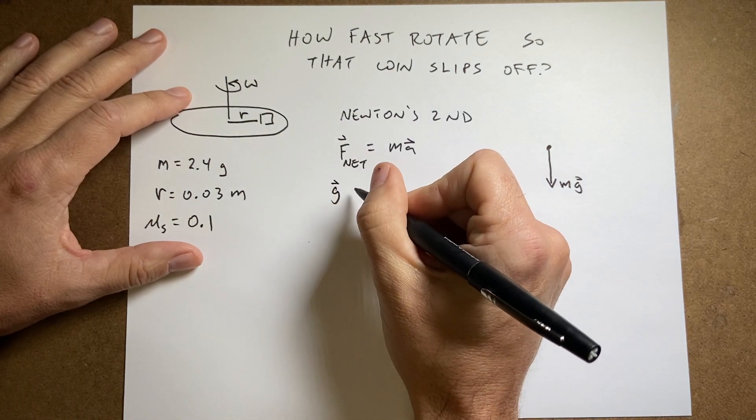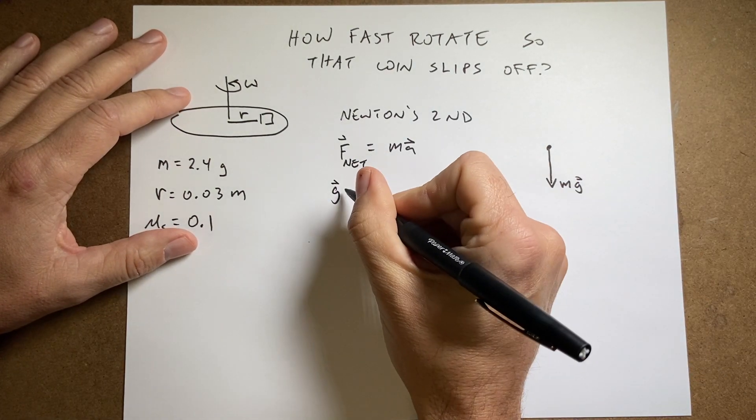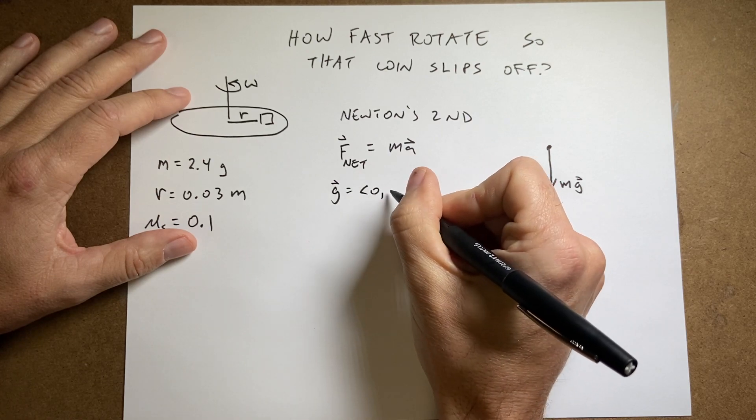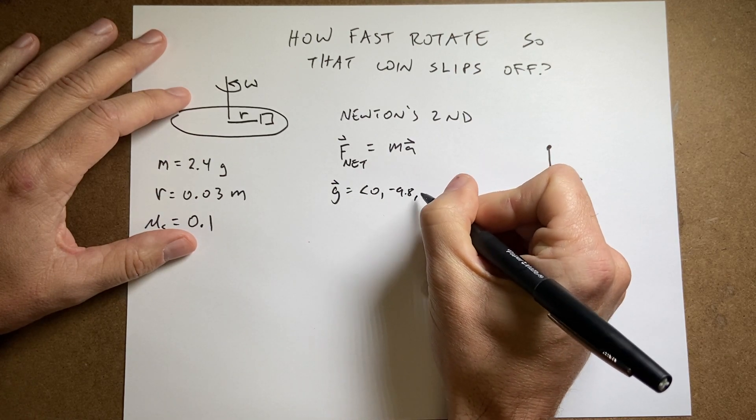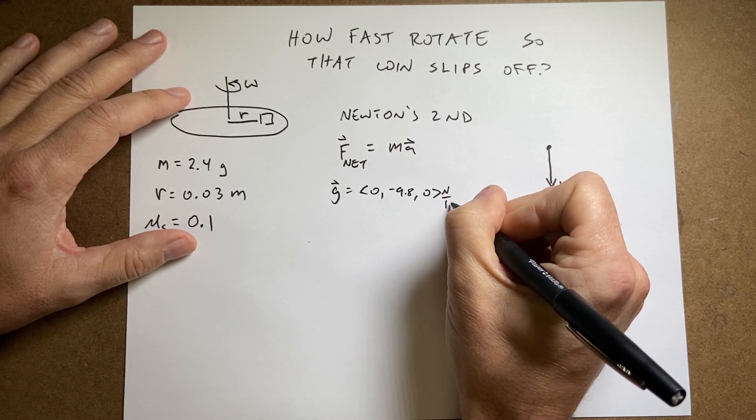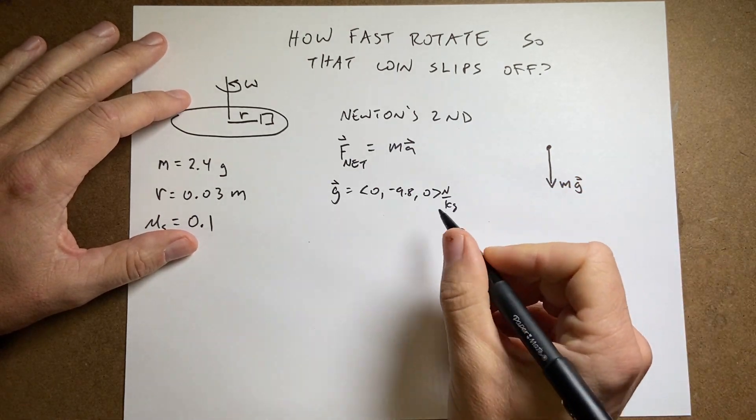And I'll write that as mg. And so g is a vector. You could write this as in vector notation negative 9.8 in the y direction, newtons per kilogram. The magnitude of g is just 9.8.